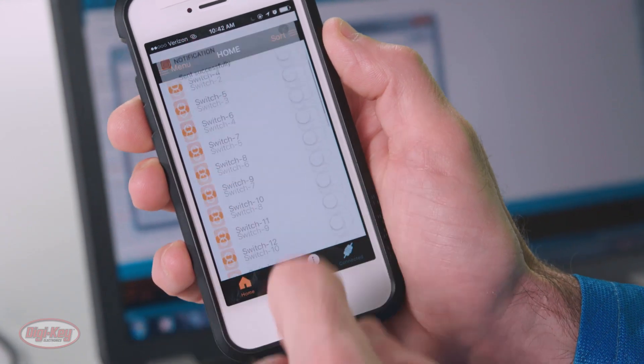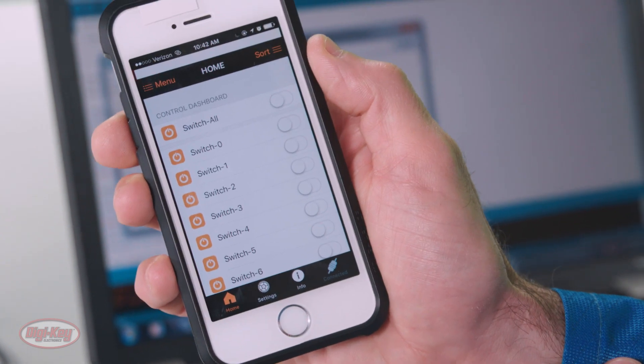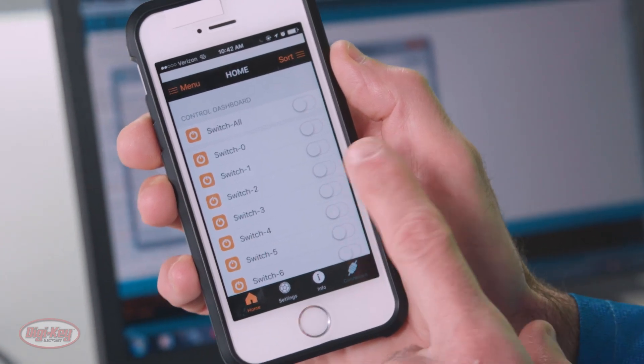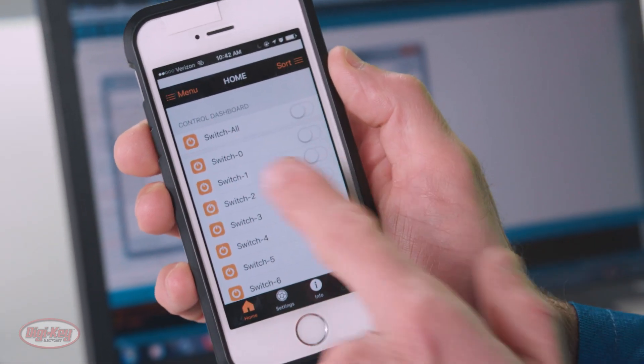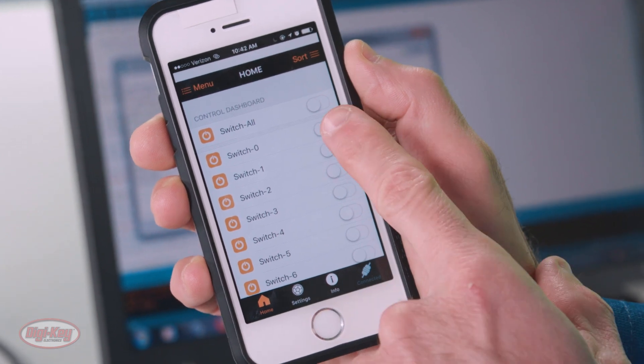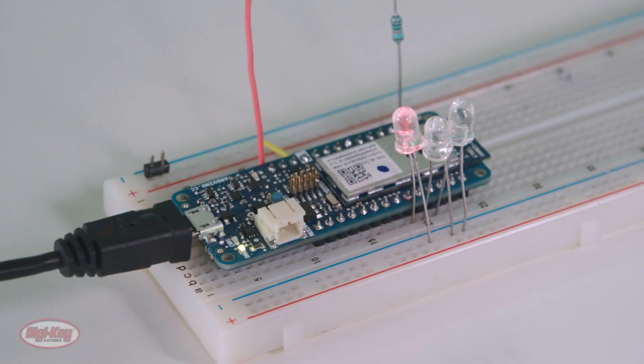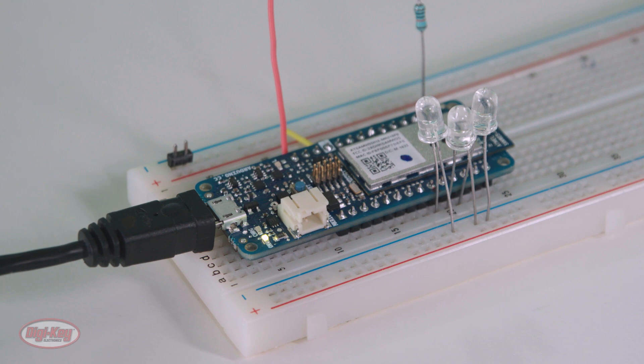So let's go back up here. As I mentioned before, the LEDs are connected to, according to this app here, switch zero, switch one, and switch two. So I can turn on one LED, and we can see over here the LED is being turned on.